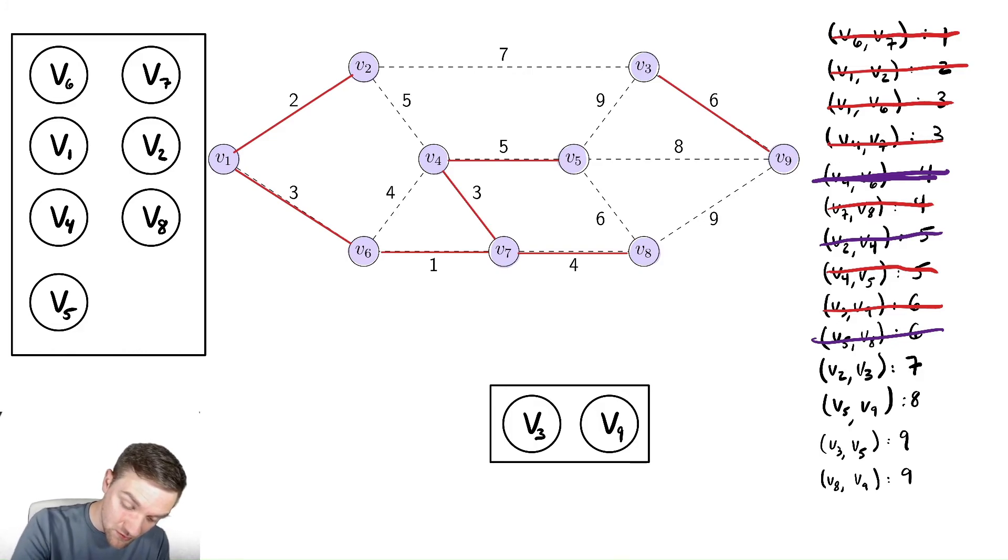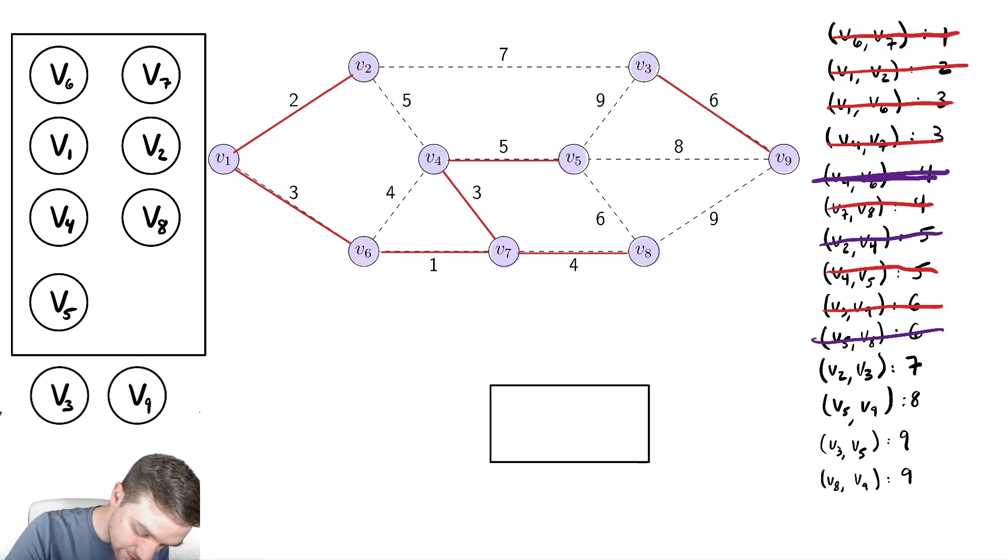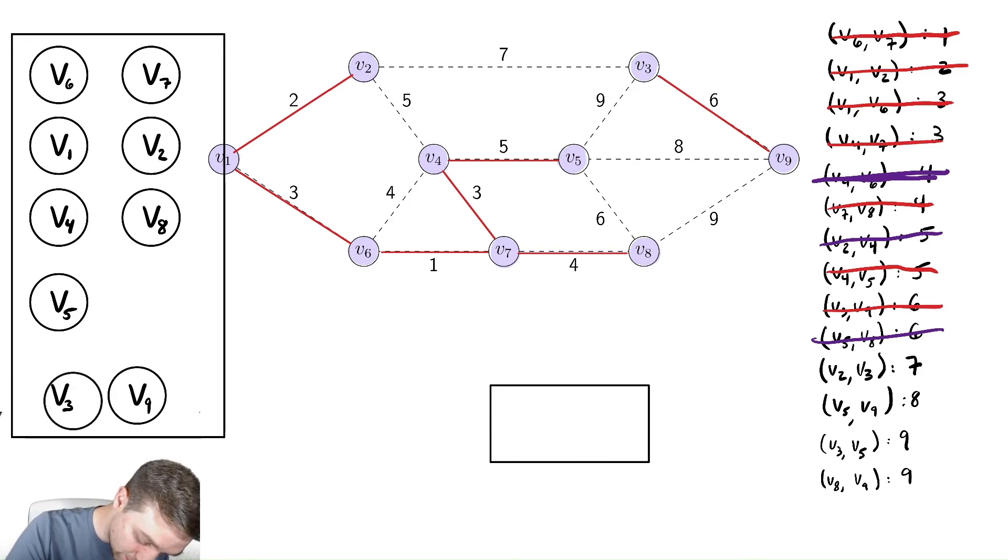v2, v3. v2 and v3 are in different sets. v2 is over here and v3 is over here. So we're going to combine these two sets. We're going to take these two nodes and move them over into this set. We're going to expand and maybe we align this a little bit better.